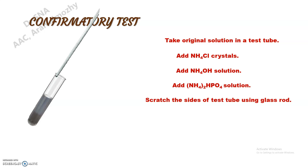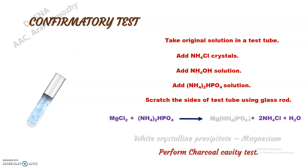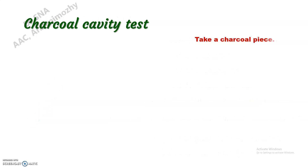Now we can see the white crystalline precipitate of magnesium ammonium phosphate. This is the confirmatory test for magnesium. We can also perform the charcoal cavity test. For the charcoal cavity test, we have to take a charcoal piece and make a cavity in it.